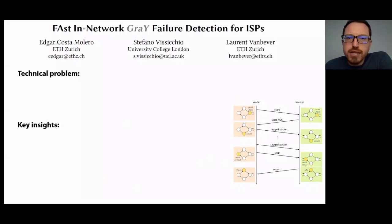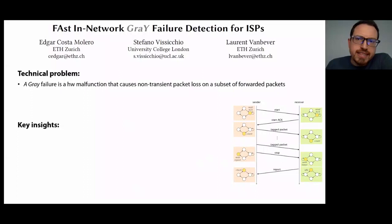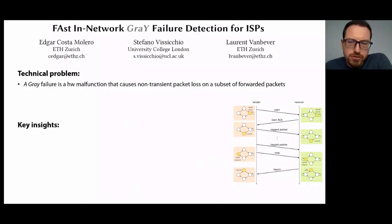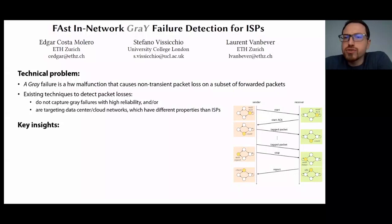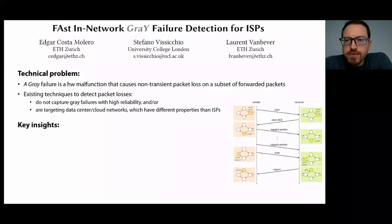The last paper of the session deals with gray failures in inter-service-provider networks. A gray failure is defined as a hardware malfunction that causes non-transient packet loss on a subset of forwarded packets — the key being that only some packets are affected. So traditional techniques relying on probe packets or packet sampling are not reliable because they may miss the failure. Other techniques have been proposed but target data center or cloud networks with low latency and high bandwidth links, so they do not fit the specific properties of ISP networks that are geographically more distributed.